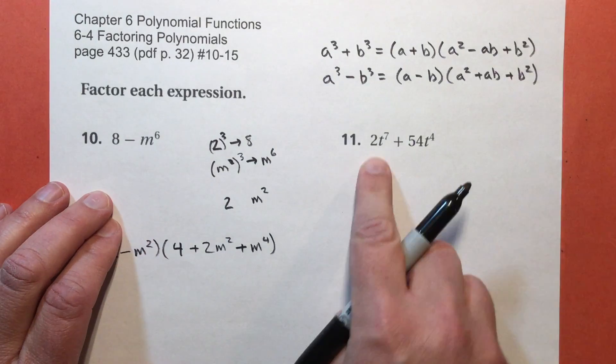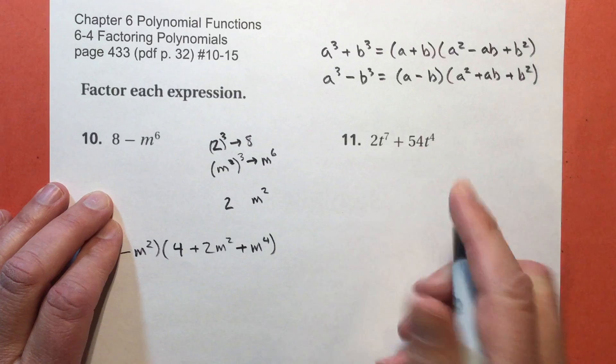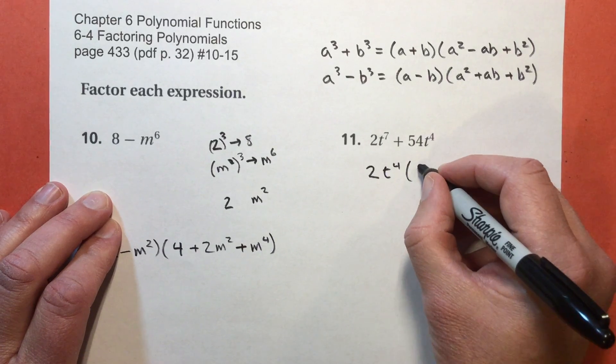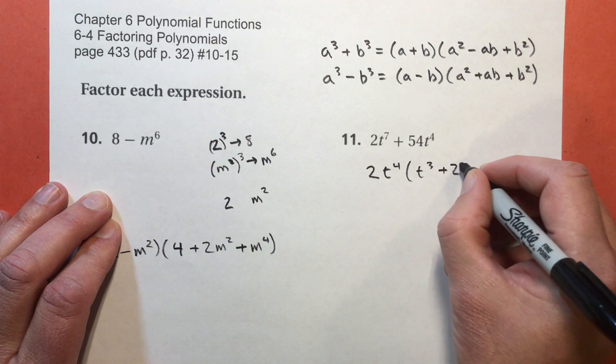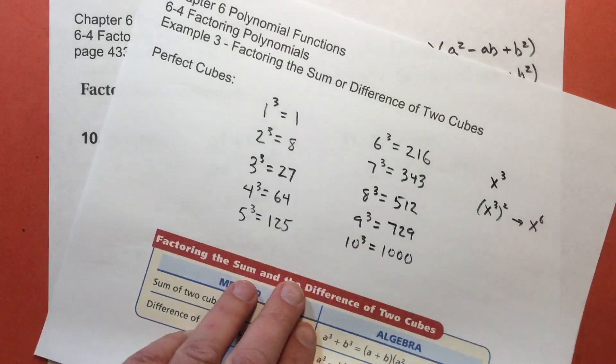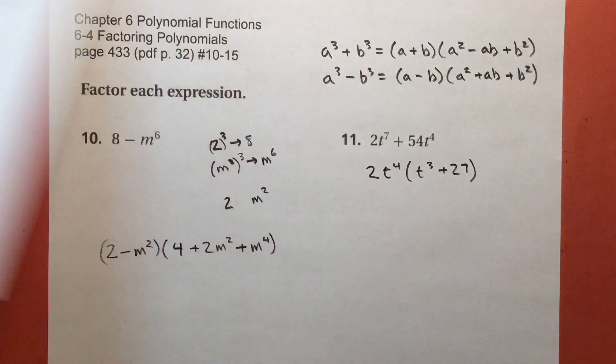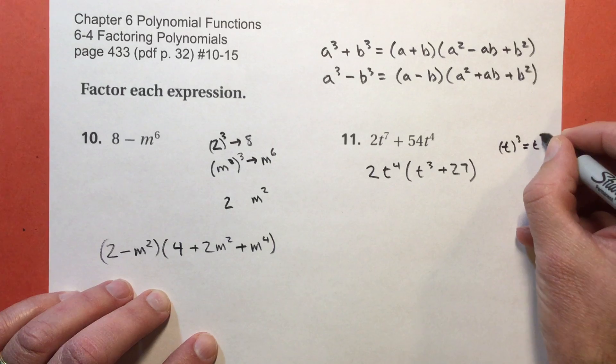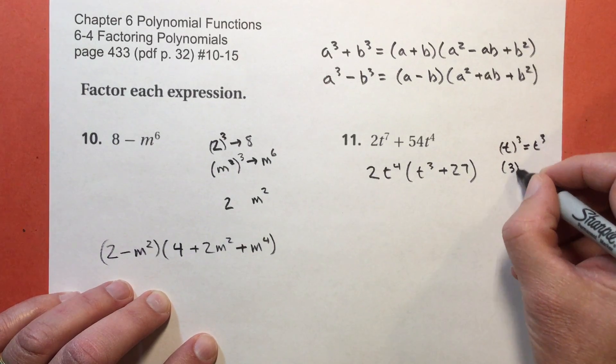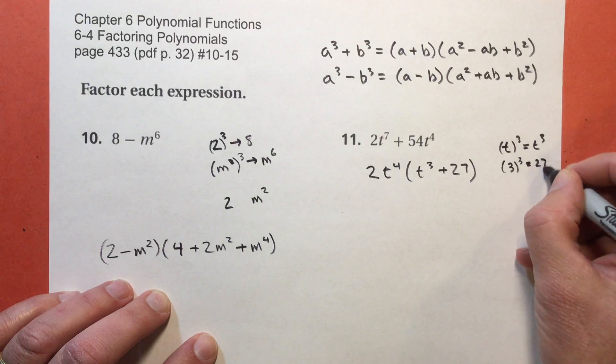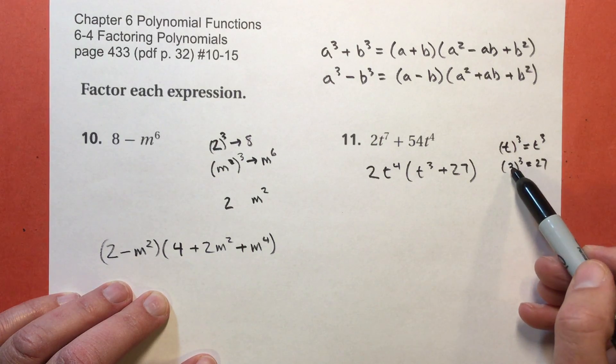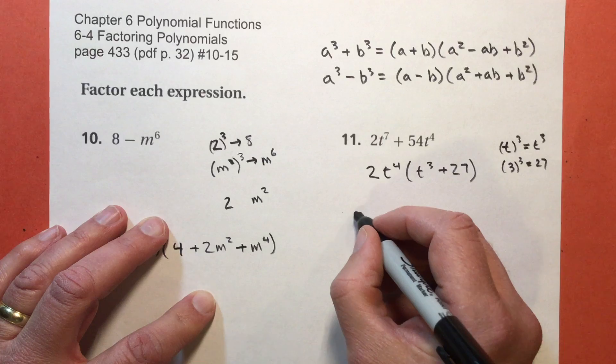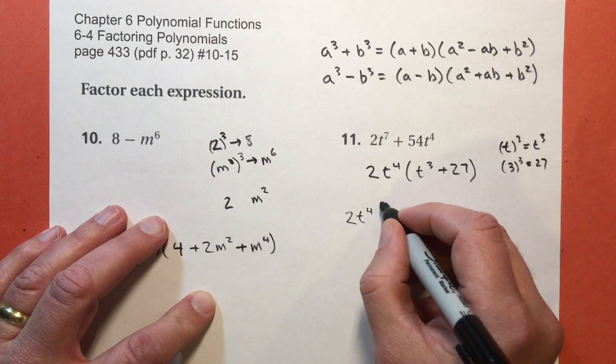Let's look at problem number 11. Like I showed you at the beginning, I have a common factor here. My common factor is 2t to the fourth power. That leaves t to the third power plus 27. What about 27? That's on my list. So this tells me that t to the third power equals t to the third power, obviously. And 3 to the third power gives me 27. So I'm going to be using t and 3 instead of a and b. I just followed the pattern. Don't forget the common factor. So I have 2t to the fourth. That's a common factor.